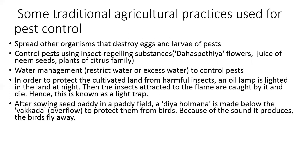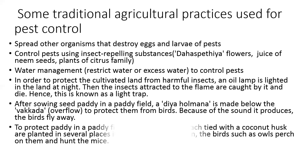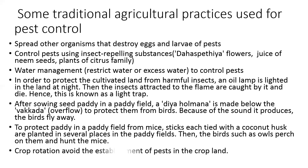After sowing seed paddy in the paddy field, a deer holman is made below the wapkada (overflow) to protect them from birds. Because of the sound it produces, the birds fly away. To protect paddy from mice, sticks tied with coconut husk are planted in several places, so that birds such as owls perch on them and hunt the mice. Crop rotation also avoids the establishment of pests in the crop plant.